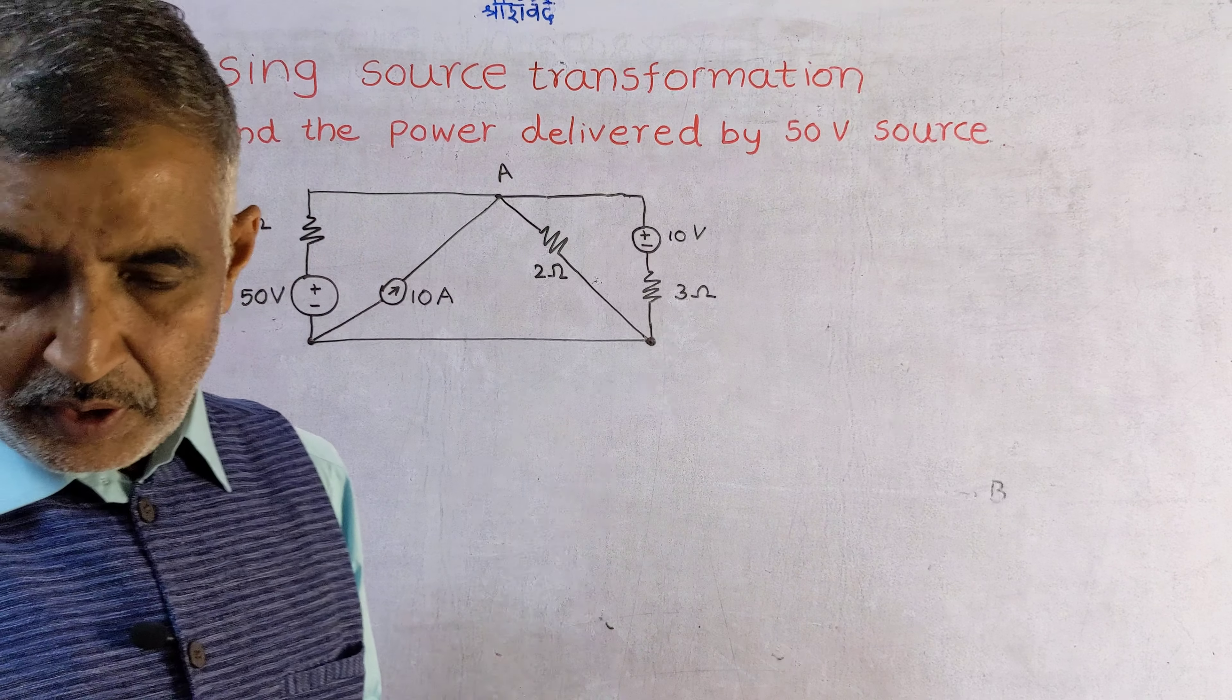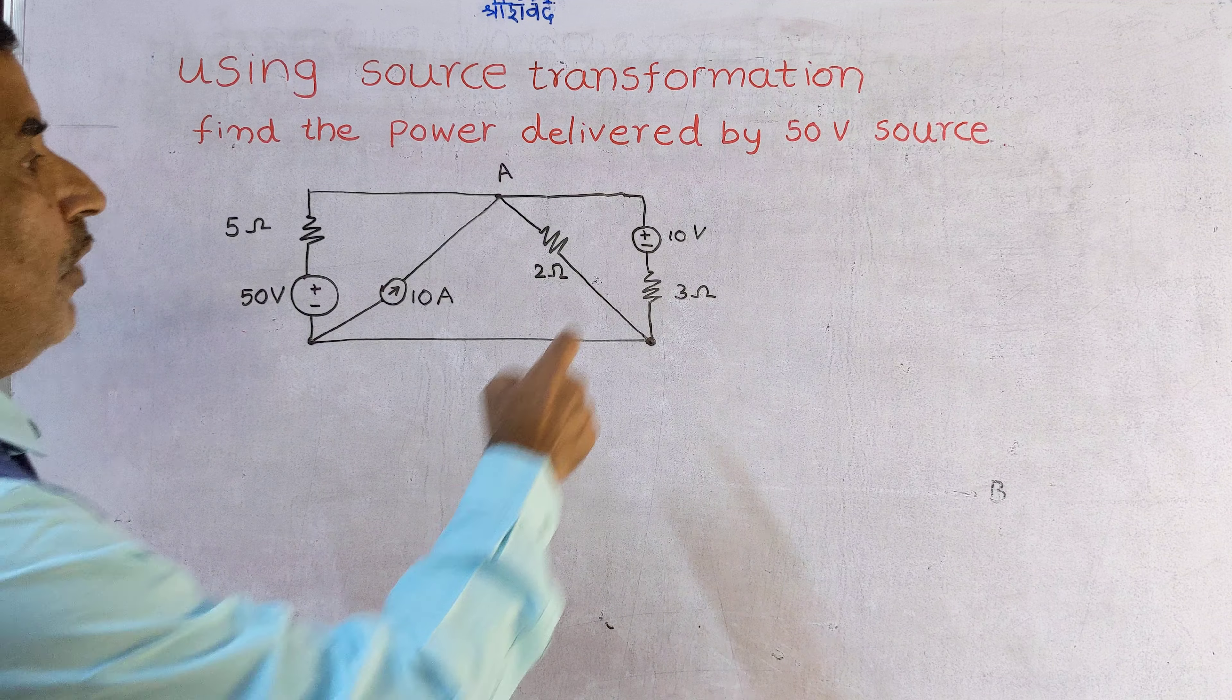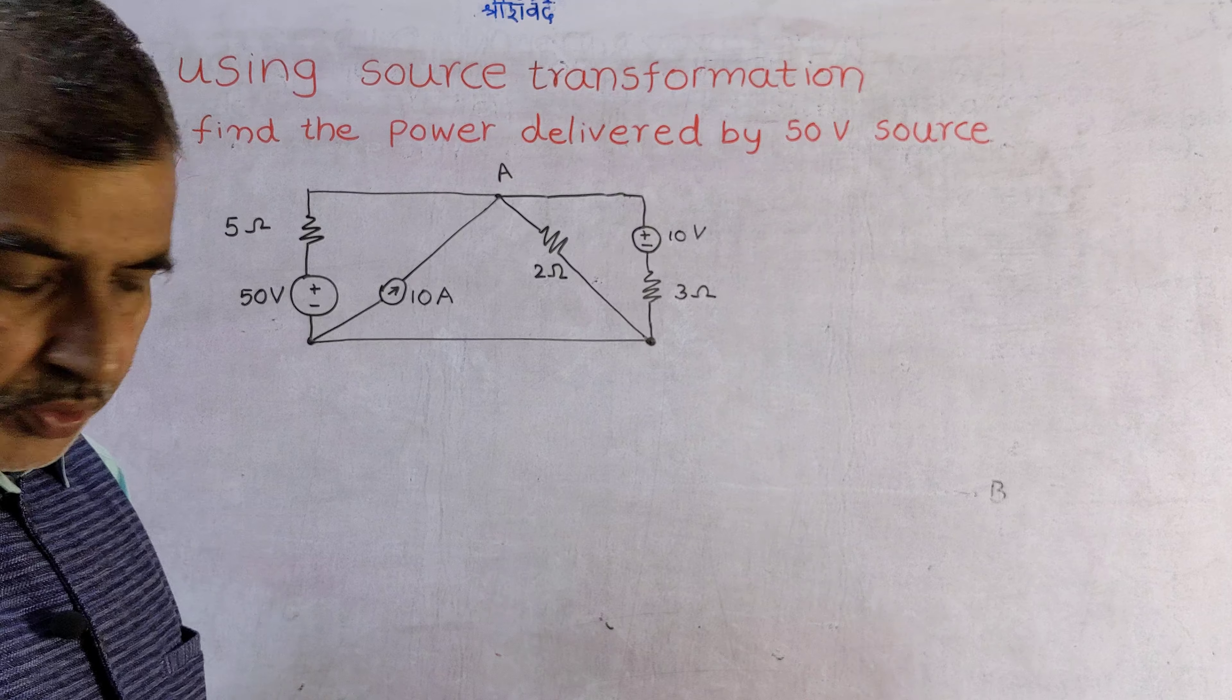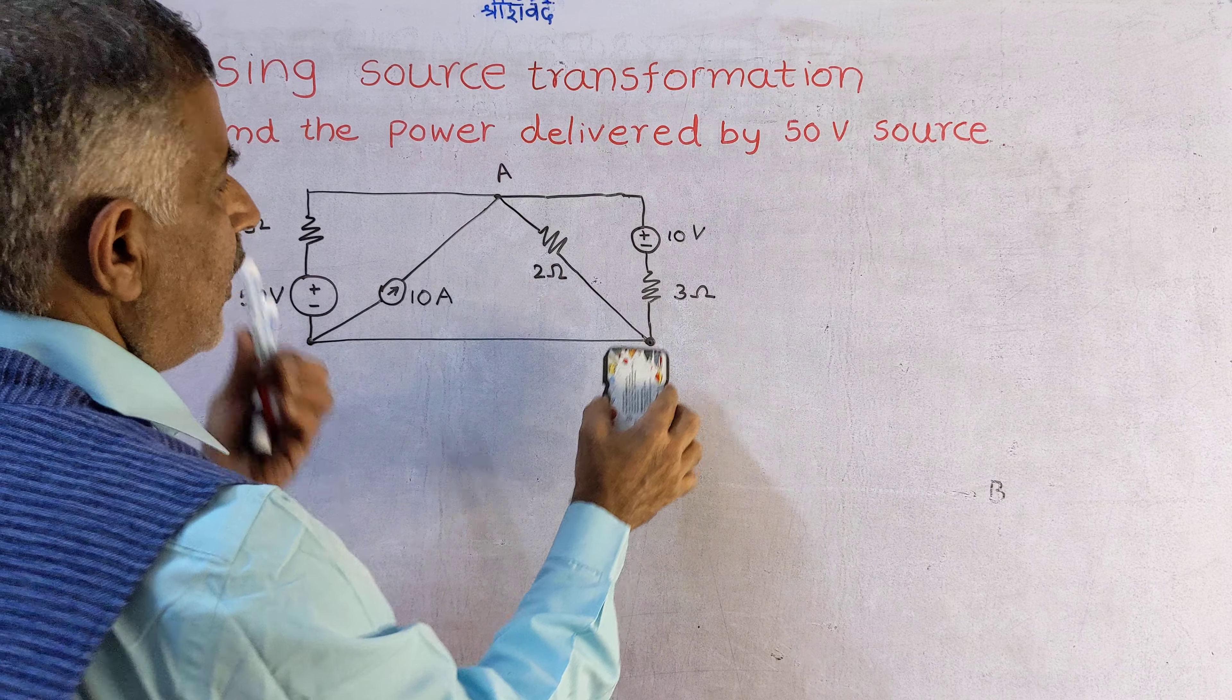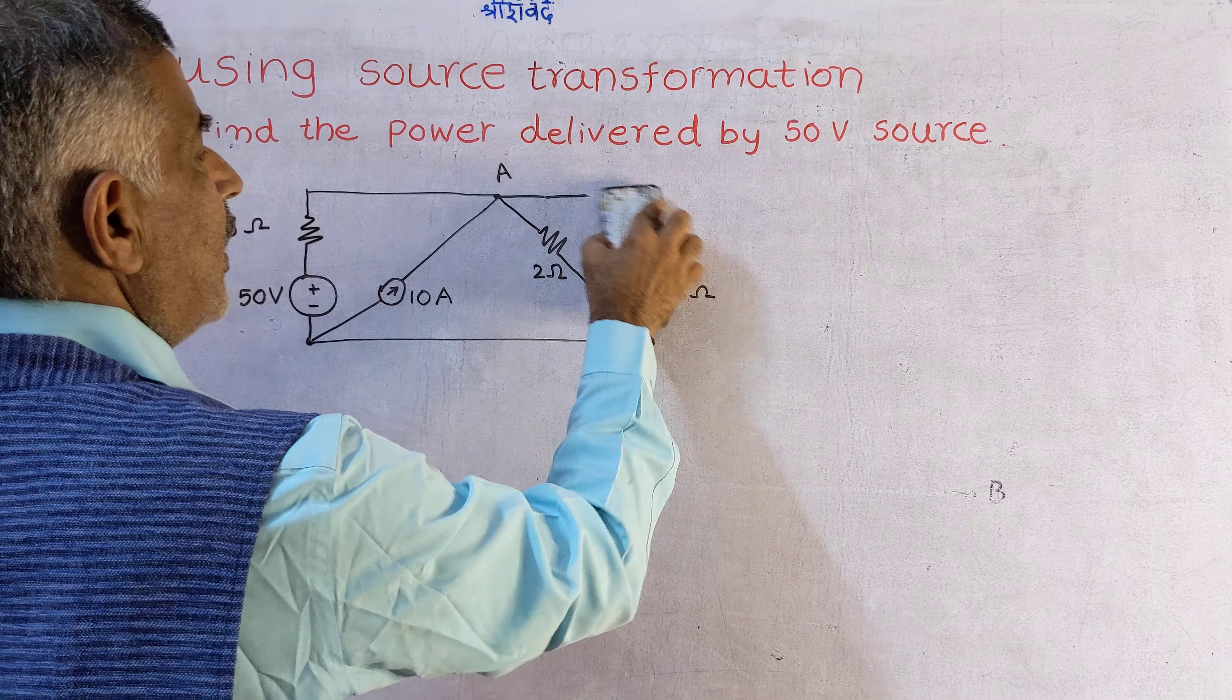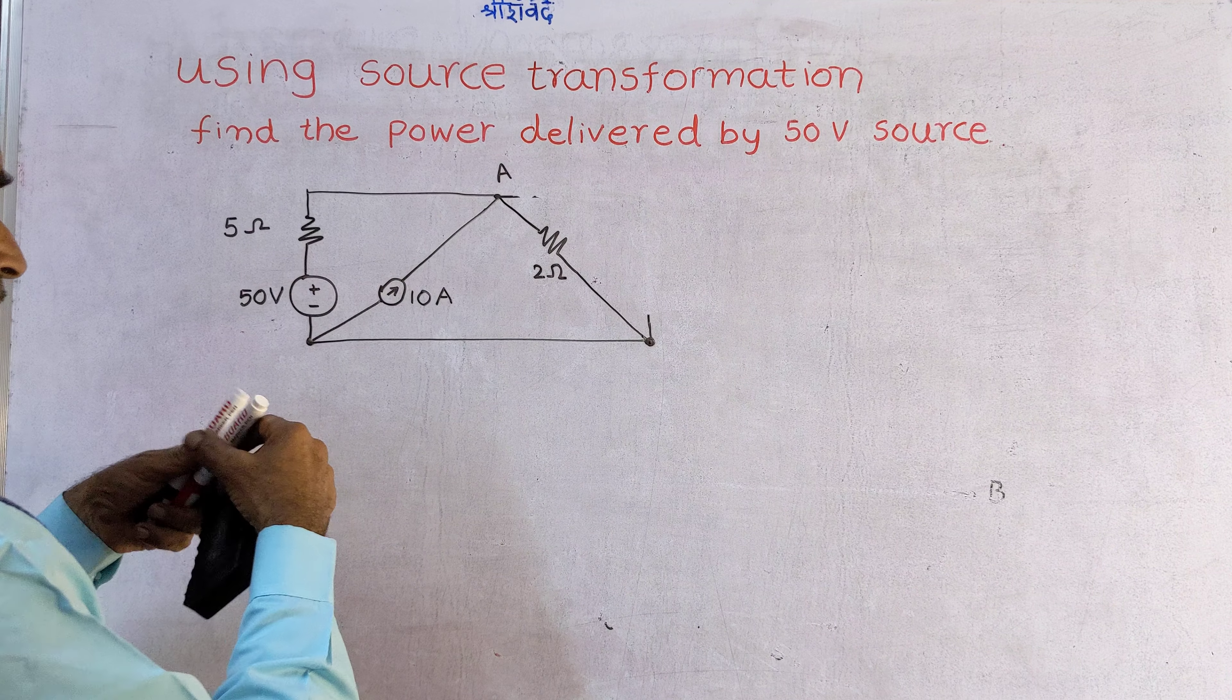Now convert this to current source. Convert this to current source, that is 10 by 3, that is 3.33 amperes in parallel with 2 ohms. 3.33 amperes.